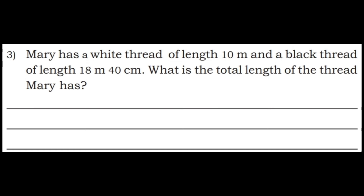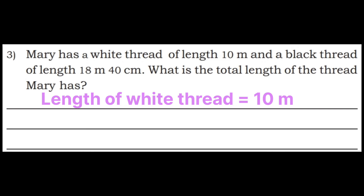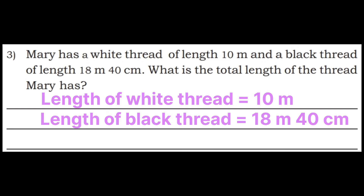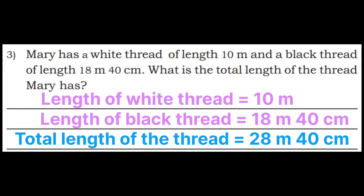Third problem: Mary has a white thread of length 10 meters and a black thread of length 18 meters 40 centimeters. What is the total length of the thread Mary has? Length of white thread = 10 m; length of black thread = 18 m 40 cm. 0 + 8 = 8; 1 + 1 = 2; centimeters = 40 cm. Total length = 28 meters 40 centimeters.